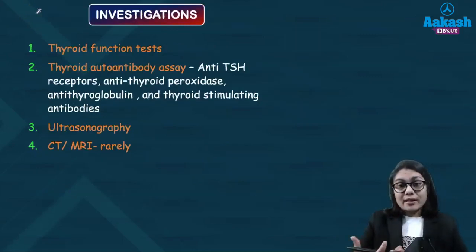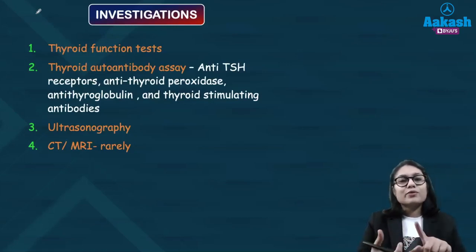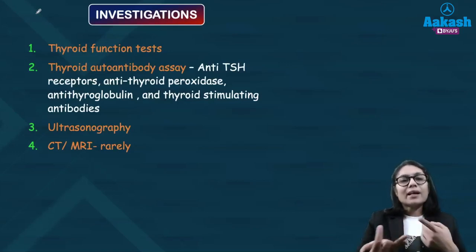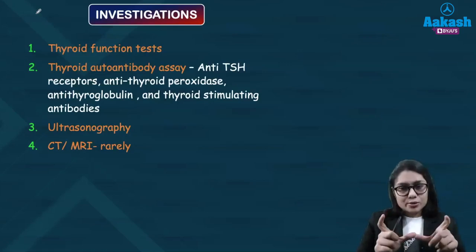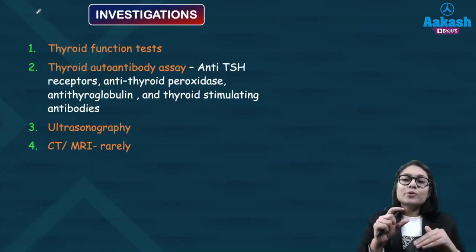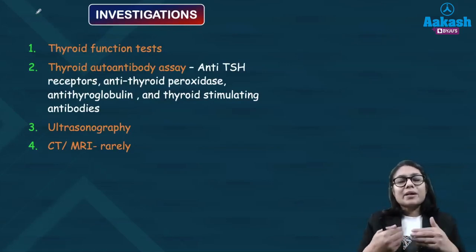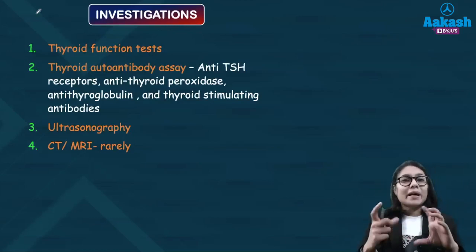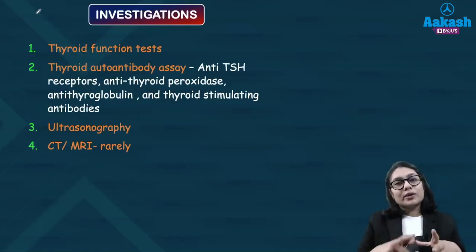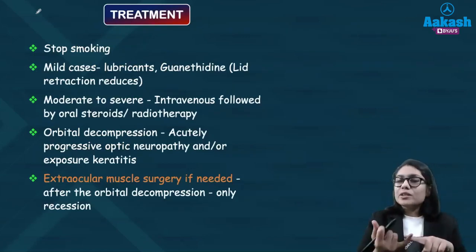Investigations include thyroid function tests with T3, T4, and TSH levels; thyroid autoantibody assays including anti-TSH receptor antibodies, anti-thyroid peroxidase antibodies, and related antibodies. Ultrasonography can show and measure muscle enlargement to monitor disease progression. CT and MRI are indicated especially when suspecting compressive optic neuropathy or when planning surgery such as orbital decompression.